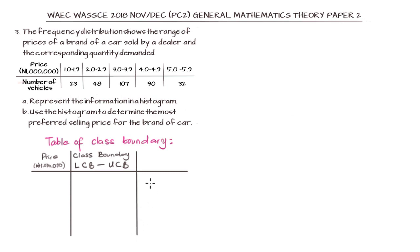Then we are going to be having a number of vehicles, which is something similar to frequency. If we are to put in our values as given in the table, we have between 1 to 1.9 million, 2 to 2.9 million, 3 to 3.9 million, 4 to 4.9 million, and 5 to 5.9 million.